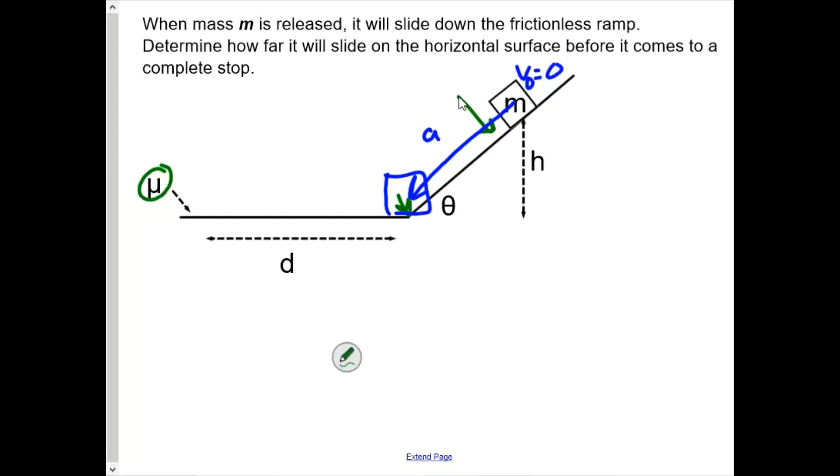Then it's going to slide, and we're going to call that, by the way, V1. So that's going to be the beginning of our horizontal motion. Then it's going to slide whatever distance horizontally, until it reaches a stop, at which point V2 is going to be equal to zero. So that's kind of the situation we have.